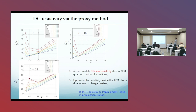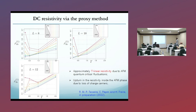These are some data we have for the DC resistivity using this proxy method. We get a fairly T-linear resistivity due to antiferromagnetic quantum critical fluctuations, but we also get an upturn of the resistivity inside the antiferromagnetic phase due to loss of charge carriers.